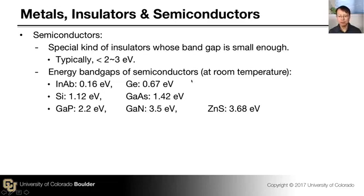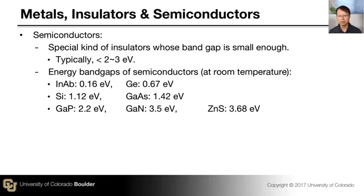The typical energy band gaps for semiconductors are listed here. Indium antimonide has a band gap of 0.16 eV. Germanium has 0.67 eV. These types of semiconductors are called narrow band gap semiconductors. Silicon and gallium arsenide have band gaps of around 1.1–1.4 eV — these are the typical energy band gaps for semiconductors. There are also semiconductors with larger band gaps: gallium phosphide at 2.2 eV, gallium nitride at 3.5 eV, and zinc sulfide at around 3.7 eV. These are called wide band gap semiconductors.